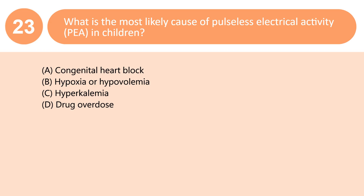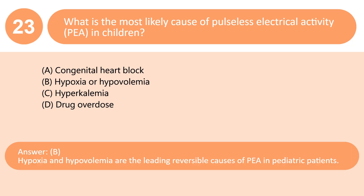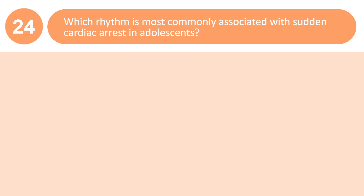What is the most likely cause of pulseless electrical activity (PEA) in children? A. Congenital heart block. B. Hypoxia or hypovolemia. C. Hyperkalemia. D. Drug overdose. Answer: B. Hypoxia and hypovolemia are the leading reversible causes of PEA in pediatric patients.